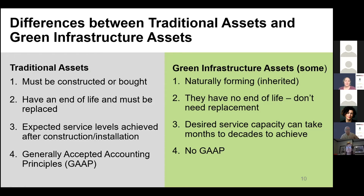I thought it would be helpful to highlight some key differences between traditional and green infrastructure assets. First, traditional assets are purchased and constructed, whereas some green infrastructure assets, like forests or wetlands, can be naturally forming and are never purchased. Another main difference is that the vast majority of traditional assets have a very clear end of life and will require full replacement at some point, whereas some green infrastructure assets — forests are a good example — have no definitive end of life and therefore don't necessarily ever need to be fully replaced.